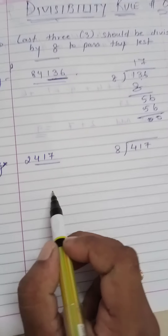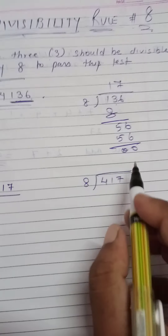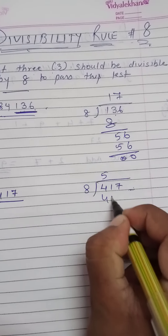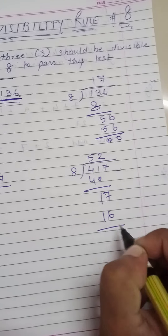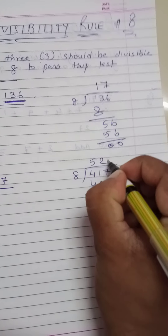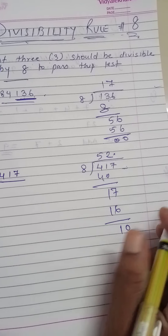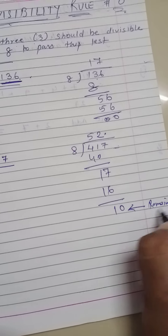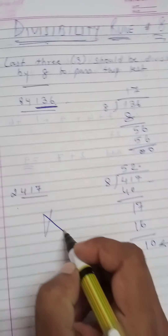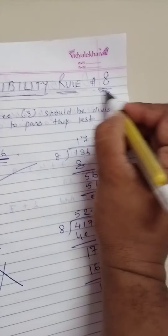Let's take one more example: 2417. We take the last 3 digits, which are 417, and try to divide by 8. 8 × 52 = 416, leaving a remainder of 1, so 417 is not exactly divisible by 8. Hence the number 2417 is not divisible by 8, whereas 84136 is divisible by the rule of 8.